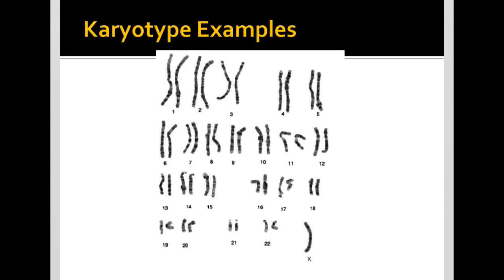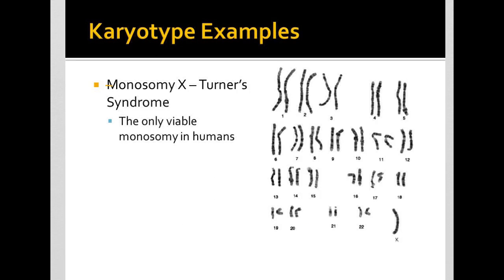Can anyone point out what is abnormal about this karyotype? I'll just give you a second here. You might have noticed that this karyotype only has one X chromosome, and this is going to lead us into the only viable monosomy in humans — the only monosomy that someone can actually have and be born with and live out their life with.